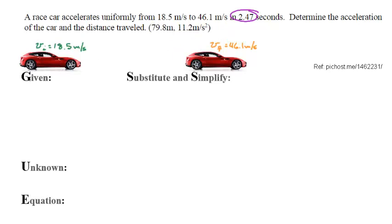So these are the givens that I have, and since this is in the x-axis, I'm going to write velocity initial equals 18.5 meters per second, and velocity final in the x-axis equals 46.1 meters per second. Now time doesn't have a direction, so I'm going to put it in black.